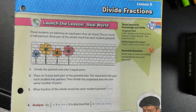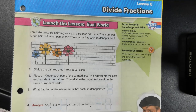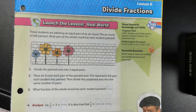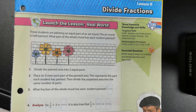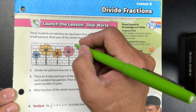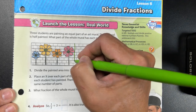It says: three students are painting an equal part of an art mural. The art mural is half painted. What part of the whole mural has each student painted? The first thing we want to do is look at just the painted portion. There were three students, so we need to divide the painted part into three equal parts.